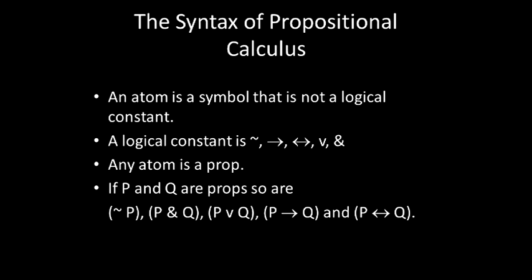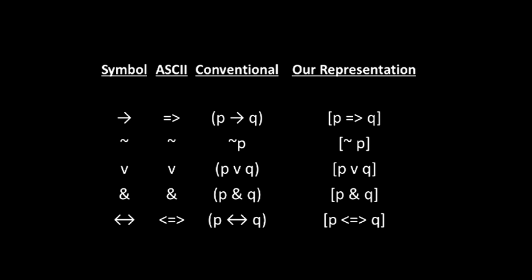An atomic proposition as a symbol, conventionally P, Q, R, etc. We'll allow any symbol that is not a logical constant to serve as an atomic proposition. The logical constants are listed here. And if P is a prop, so are any of the following. Now, some of the conventional symbols are not ASCII keyboard characters, so we will use the composite symbols as replacements.